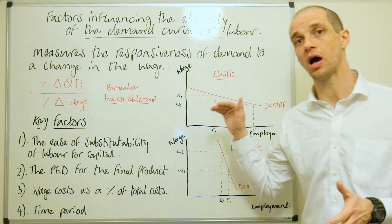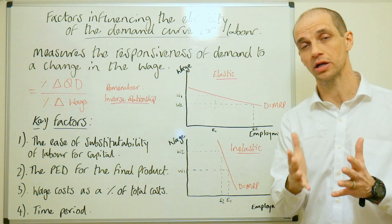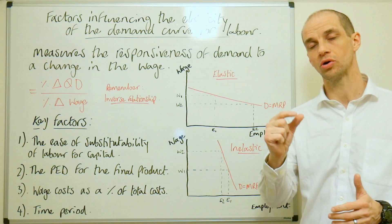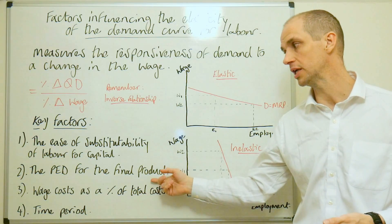...that you're able to do so without too much of a ramification to the actual quantity demanded. So if you've got a highly differentiated product, then you can pass on additional wage costs quite easily.